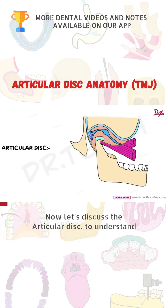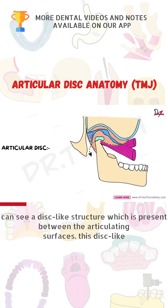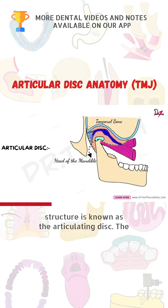Now let's discuss the articular disc. To understand this, let's focus on this diagram. Now if you see here, we have the head of the mandible bone, we have our temporal bone, and between these two articulating surfaces, we have this disc here — this is the articulating disc.